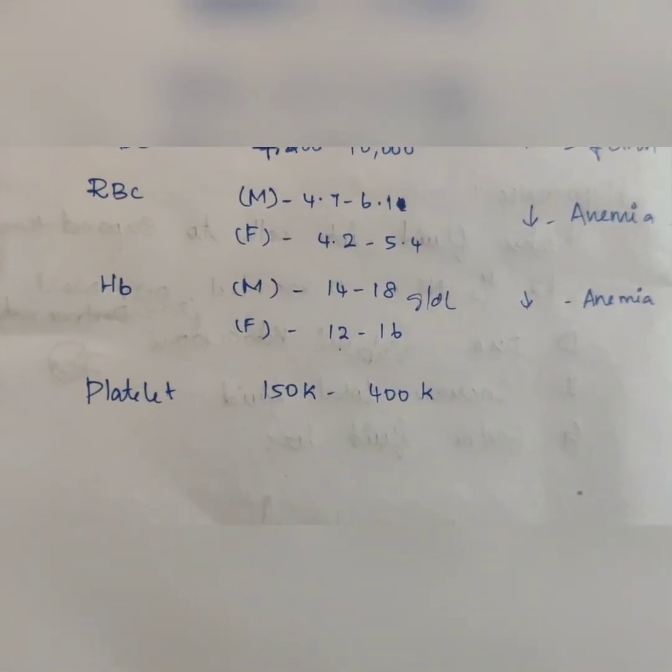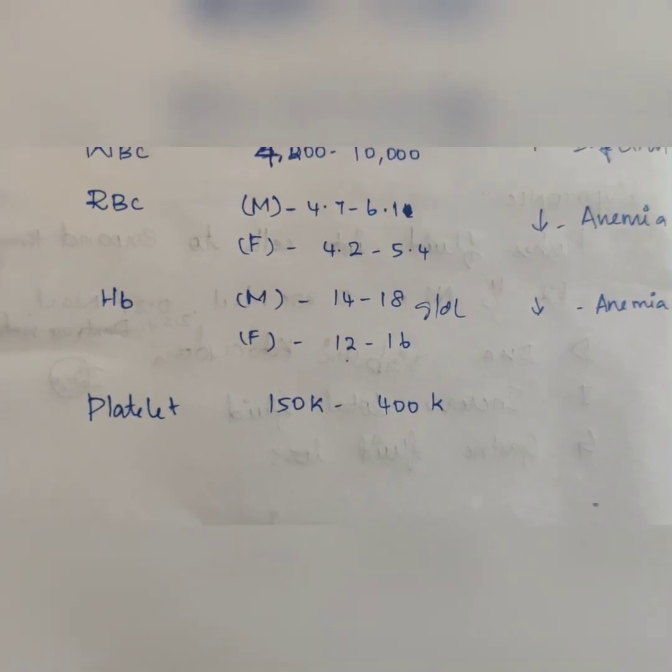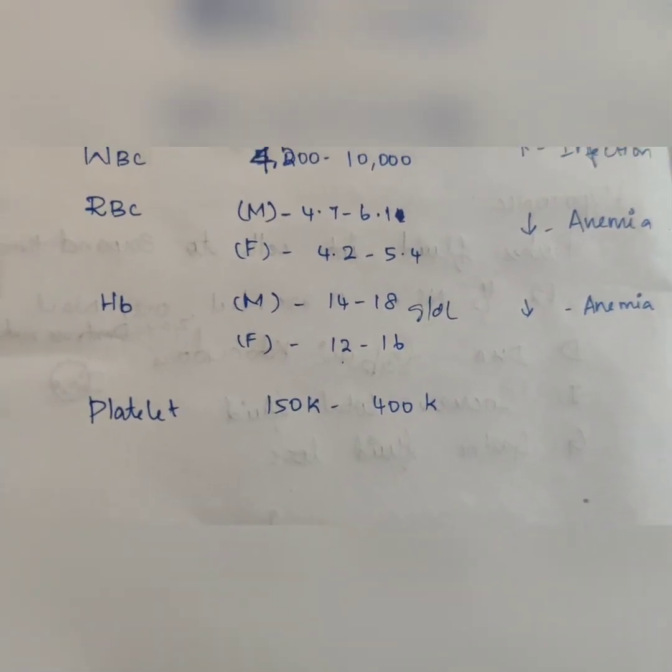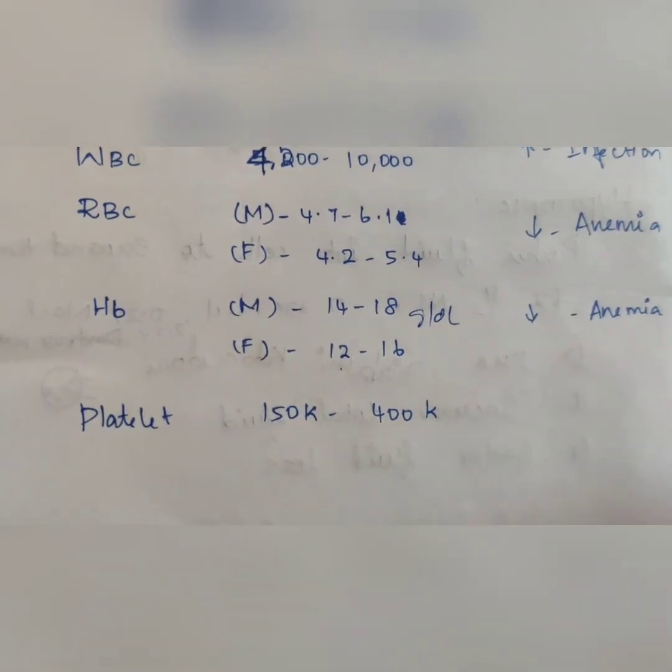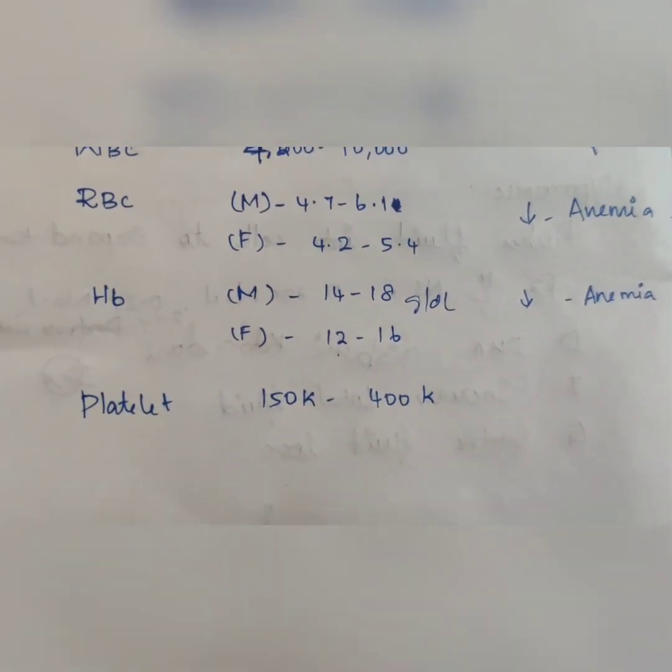Next, platelet. 150,000 to 400,000 is normal platelet level. In dengue patients, platelet count decreases.